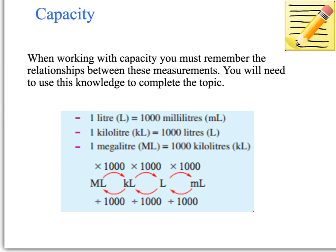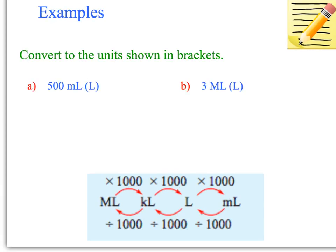Make sure you write this down in your book and refer to it during the activity. You may be asked to convert to the unit shown in brackets, like we did with length. For example, convert 500 millilitres to litres. Referring to our diagram, converting from millilitres to litres means going from smaller to larger, so we divide by 1,000. Remember that every unit in capacity converts by 1,000, going millilitres to litres, litres to kilolitres, and kilolitres to megalitres.